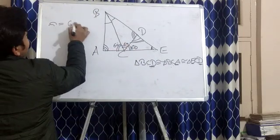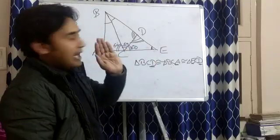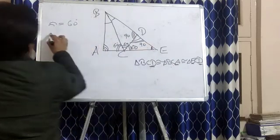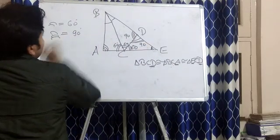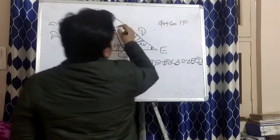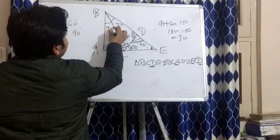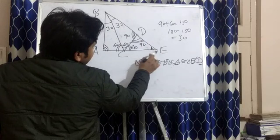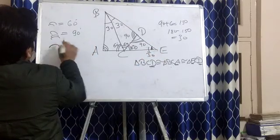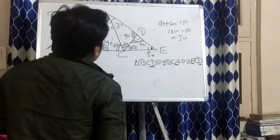The double-curve angle equals 60 degrees because all three angles are supplementary along the straight line, so they sum to 180 degrees and each is 60 degrees. Since the line is perpendicular, the triple-curve angle is 90 degrees. In triangle BCD: 90 plus 60 is 150, so the third angle is 180 minus 150, which is 30 degrees. This single-curve angle is 30 degrees, and since corresponding angles are equal, the angle in triangle ECD is also 30 degrees.